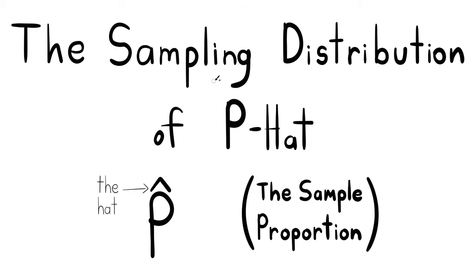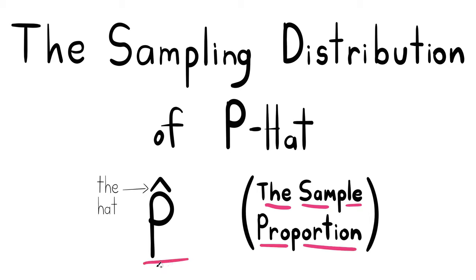This is Michael Sulock and this video is all about an idea called the sampling distribution of P-hat. What's P-hat? In words it's the sample proportion and in symbols it's a P with a hat on top — kind of looks like an arrow or a carrot. So let's jump right in.